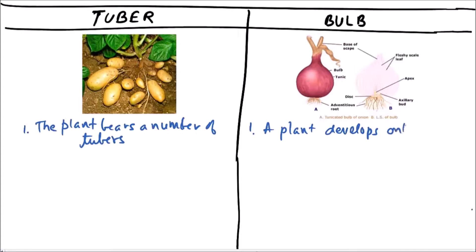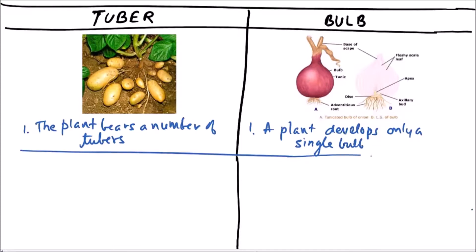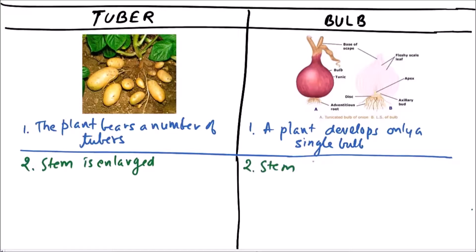In the case of tuber, the stem is enlarged. In the case of bulb, the stem is reduced and discoid.